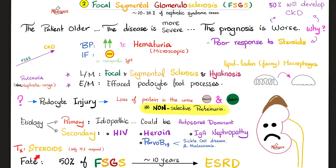Treatment: the only options are steroids or immunosuppressants, but only about 15% of patients respond. The others do not respond and will end up with end-stage renal disease — it is a horrible disease. Some doctors consider focal segmental glomerulosclerosis a complication of minimal change disease, arguing the progression goes: minimal change disease → focal segmental → end-stage renal disease. Other doctors argue that focal segmental is a completely separate pathology from minimal change disease, with no relationship between the two — and both sides debate heatedly.